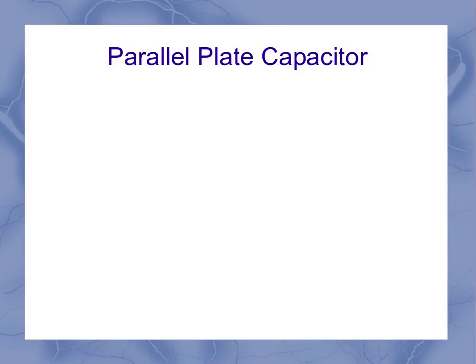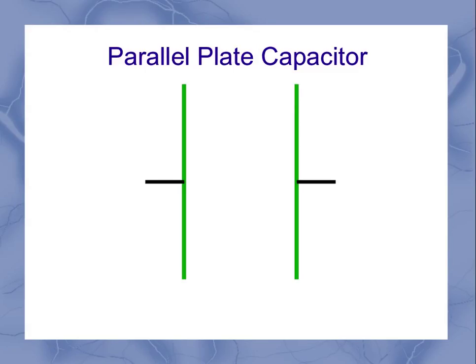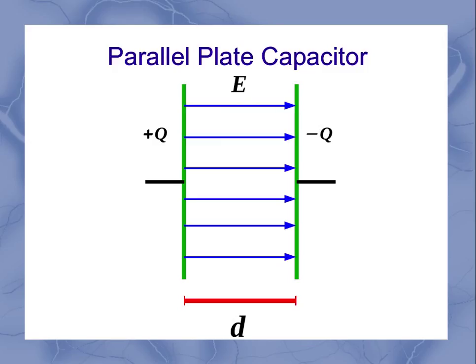The most common type that we discuss in basic physics is what we call a parallel plate capacitor. In this case, I'm going to have two separate metal plates or some other type of conductor, and they're going to be separated by some distance d. I'm going to store positive charge q on one side and negative q on the other side. This is going to establish an electric field between the two plates, going from the positive plate towards the negative plate.